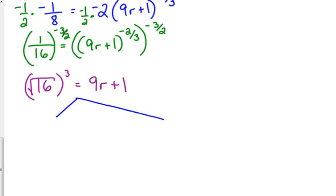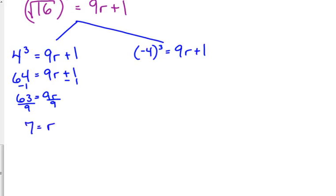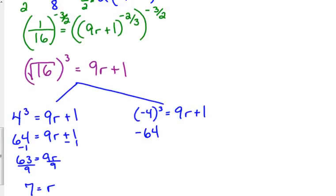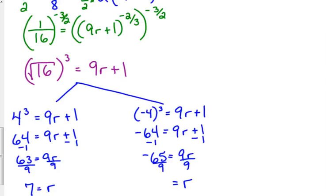Now, what do we have to remember if we take an even root? We've got two answers, so we need to split this into two right now. We've got positive 4 cubed, the square root of 16 being positive 4, cubed that, so that's equal to 9r plus 1. And then we have the negative 4, negative square root of 16 cubed is equal to 9r plus 1. So 4 cubed is 64. Solve these equations. 63 is equal to 9r, so r equals 7. For the other one, we get negative 64 is equal to 9r plus 1. Subtract 1 from both sides. Negative 65 equals 9r. Divide that by 9. Negative 65 is not evenly divisible by 9. They don't have anything in common, so we leave it.